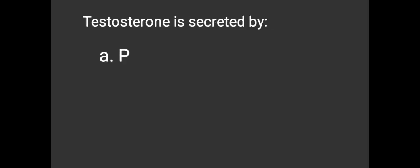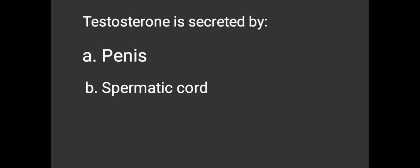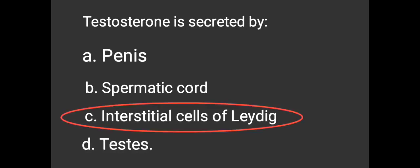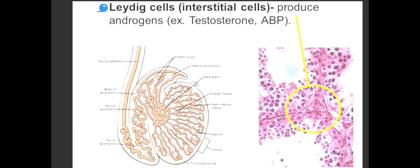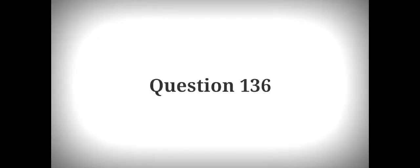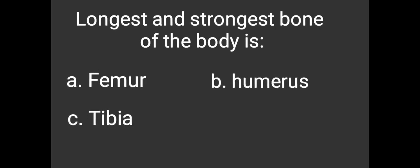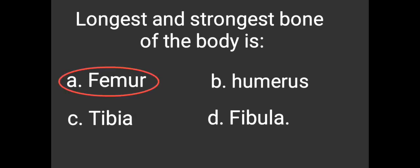Testosterone is secreted by: A. Penis, B. Spermatic cord, C. Interstitial cells of Leydig, D. Testis. The answer is C. Interstitial cells of Leydig. The strongest bone of the body is: A. Femur, B. Humerus, C. Tibia, D. Fibula. The answer is A. Femur.